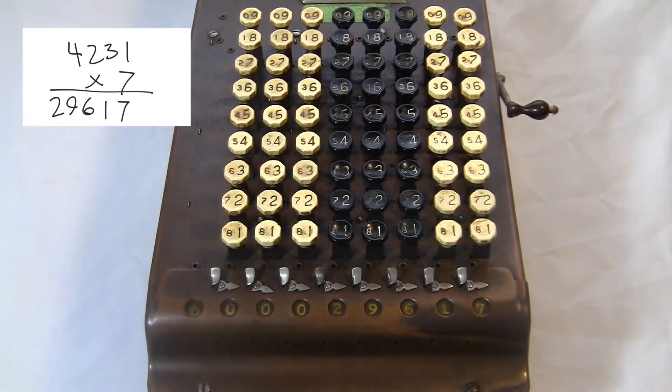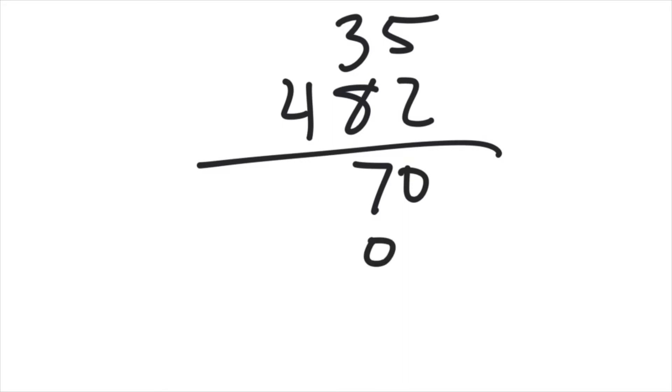Now with more digits, it's a bit more interesting. Let's do 35 times 482. On paper, this looks like this. You do three products and add them all together at the bottom, offsetting the digits as appropriate.